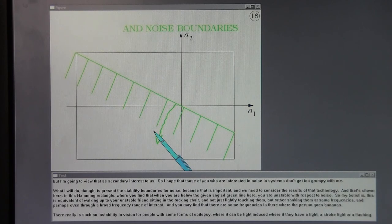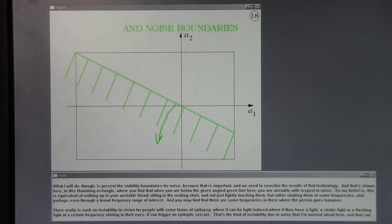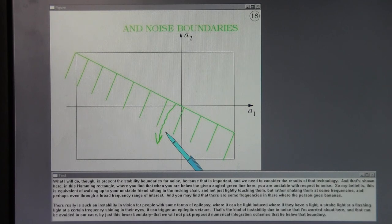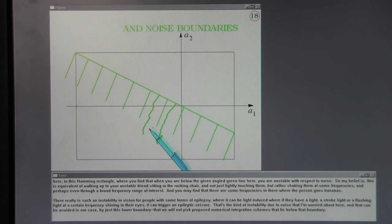And that's shown here in this Hamming rectangle, where you find that when you are below the given angled green line here, you are unstable with respect to noise. So my belief is, this is the equivalent of walking up to your unstable friend sitting in the rocking chair, and not just lightly touching them, but rather shaking them at some frequencies, and perhaps even through a broad frequency range of interest. And you may find that there are some frequencies in there where the person goes bananas. That can be avoided in our case by just this lower boundary that we will not pick proposed numerical integration schemes that lie below that boundary.